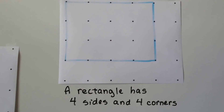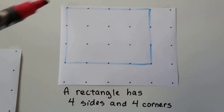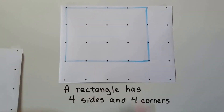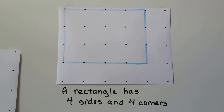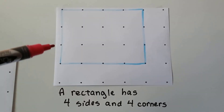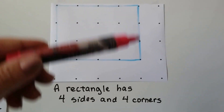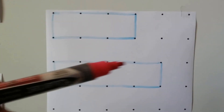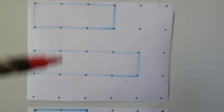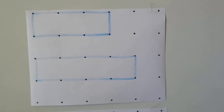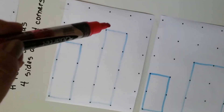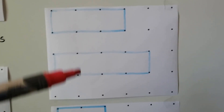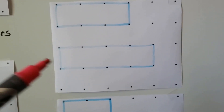A rectangle has four sides and four corners: one side, two, three, four sides, and one, two, three, four corners. I made a big one by going four units across and three units down, because the rectangle's sides are not all the same length — it's going to have long sides and short sides. You can even make it go this way: one across and four down, or one across and three down. As long as you've got two sides that are the same length and then two sides that are another length, that'll make a rectangle.